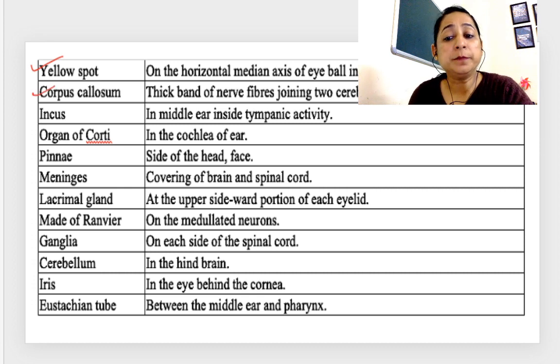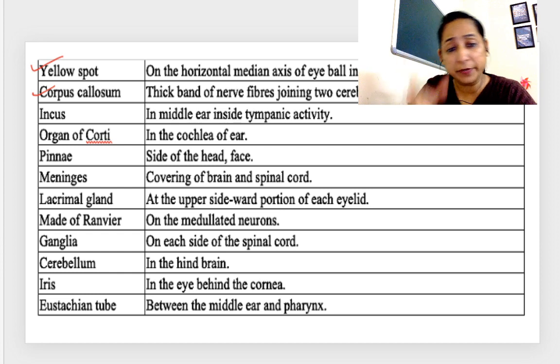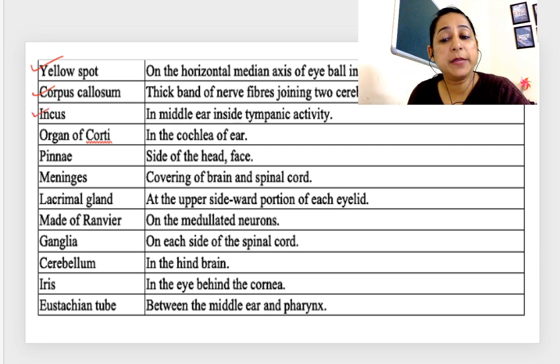Yellow spot, on the horizontal median axis of eyeball in retina. Corpus callosum, it is present in between the cerebral hemispheres, very important question. Incus, it is in the middle ear inside the tympanic cavity. Organ of Corti, cochlea of the ear. Pinna, on the side of the head around the face.